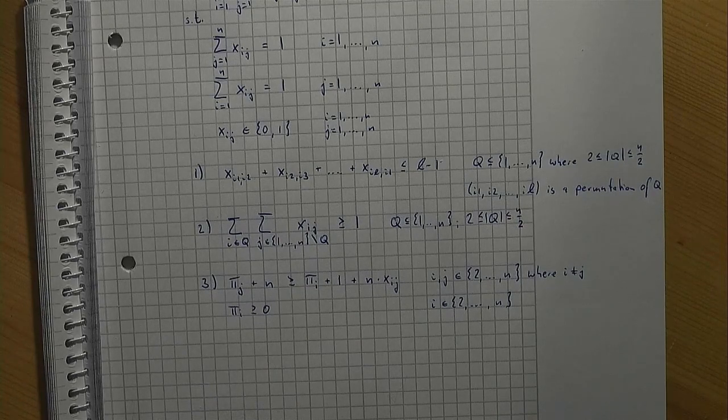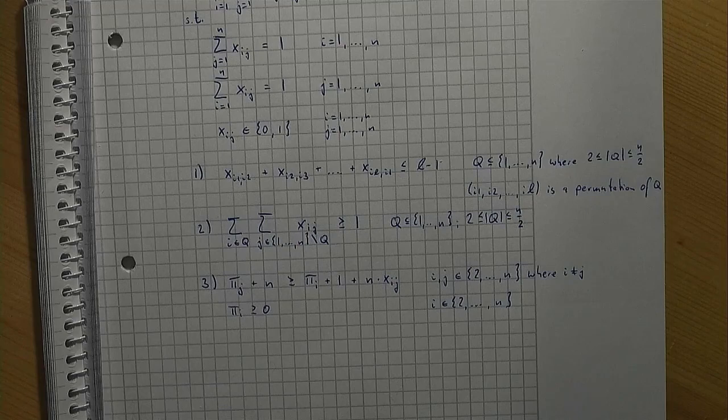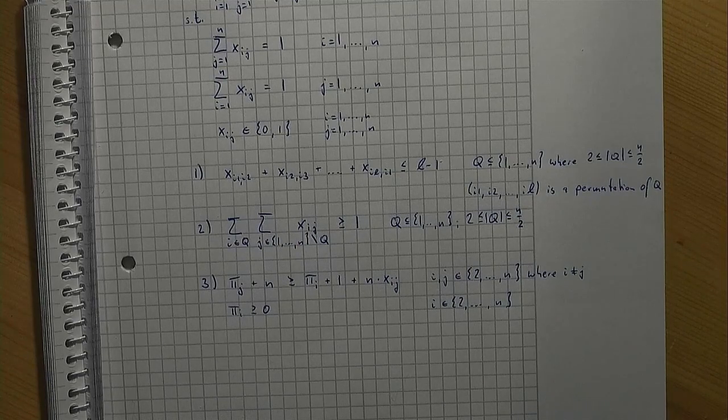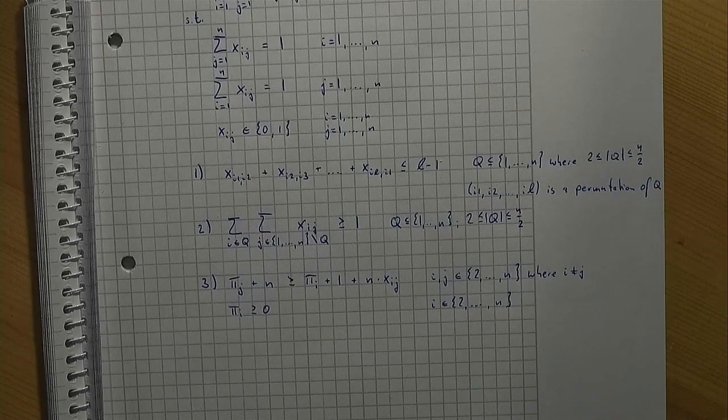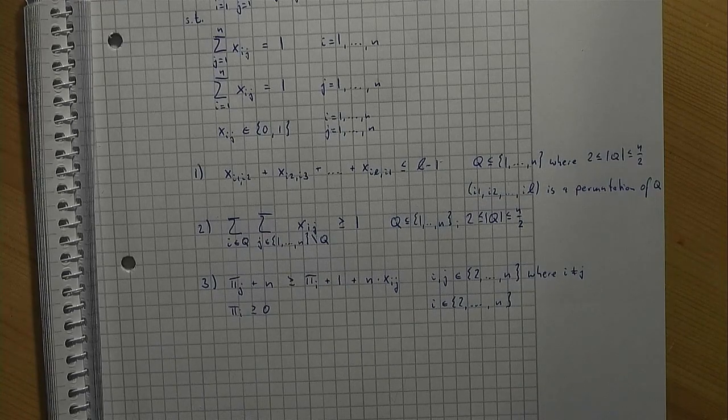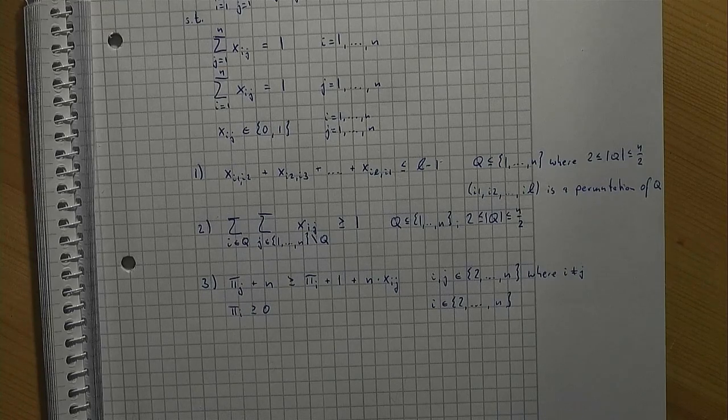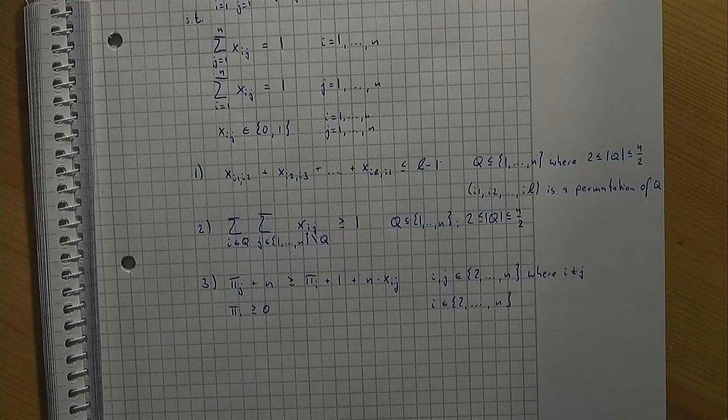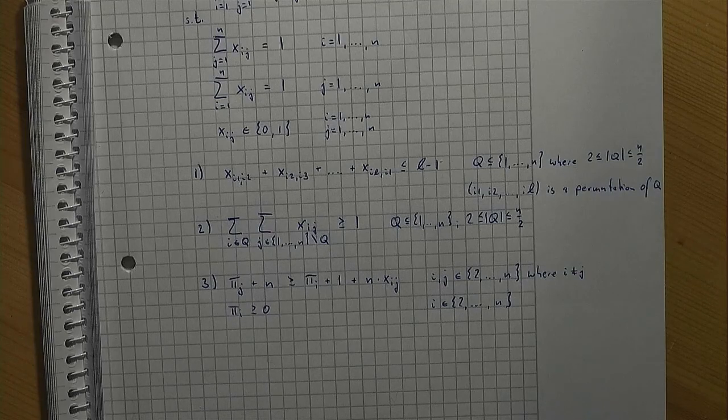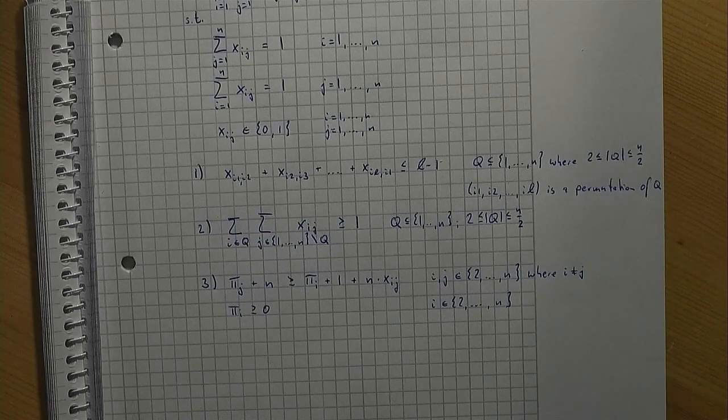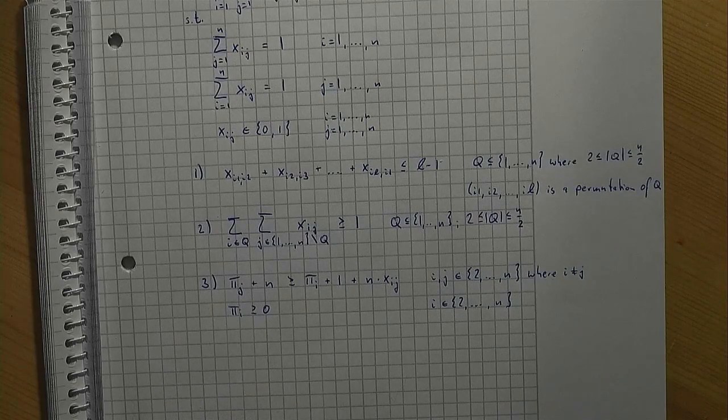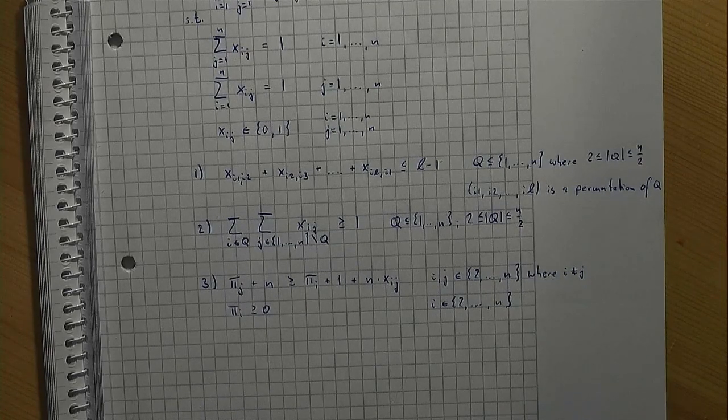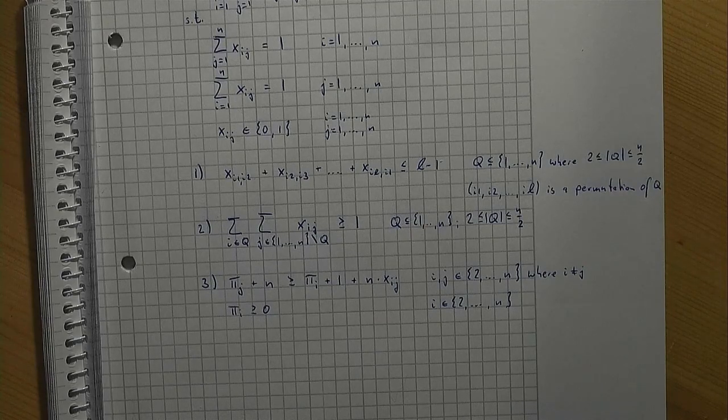If we do not travel from location i to location j, the variable xij is 0. In that case, the constraint simply states that pi j plus n is greater than or equal to pi i plus 1, which is always true as mentioned before. On the other hand, if we travel from location i to location j, the variable xij is 1. The constraint then states that pi j is greater than or equal to pi i plus 1. Note that plus n shows up on both sides of the constraint in this case and can be subtracted.